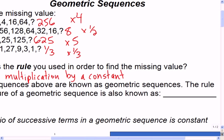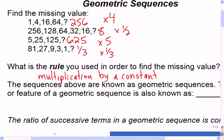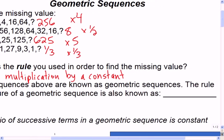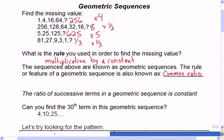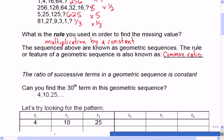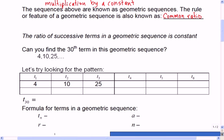So the rule that we're using to find the missing value is that there's multiplication by a constant. And that's what makes up a geometric sequence. When you hear that term geometric sequence, you can guarantee that that's the rule. You'll always be multiplying by a constant. Term by term they're all multiplied by the same value.